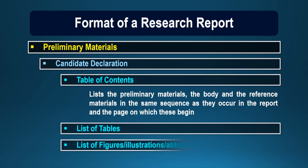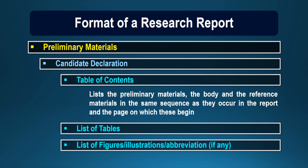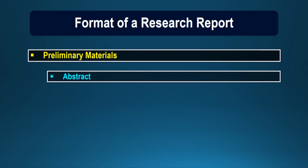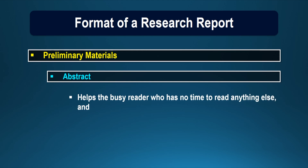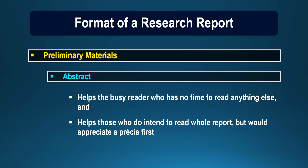The list of tables provides the tables contained in all the chapters, and also the list of figures, illustrations, and abbreviations if any. We can also include an abstract under preliminary material, because abstracts help the busy reader who has no time to read anything else, and may help those who do intend to read the whole report but would appreciate a preview first. So an abstract or summary of the report is also written in a research report.